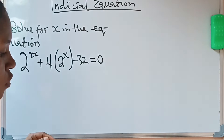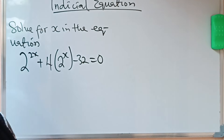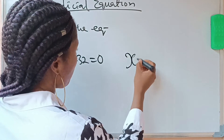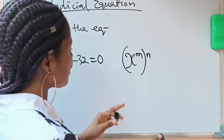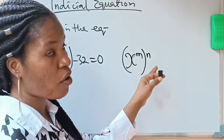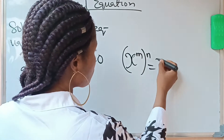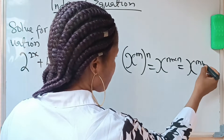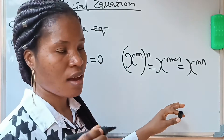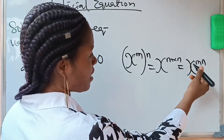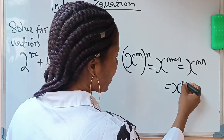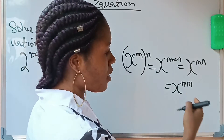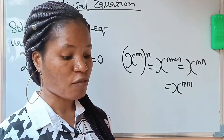This 2 raised to the power of 2x — using the law of indices which states that x raised to the power of m, raised to the power of n, is equal to x raised to the power of m times n, which equals x raised to the power of mn. We can also write it as x raised to the power of n times m, because m times n is still mn. I have not changed anything.